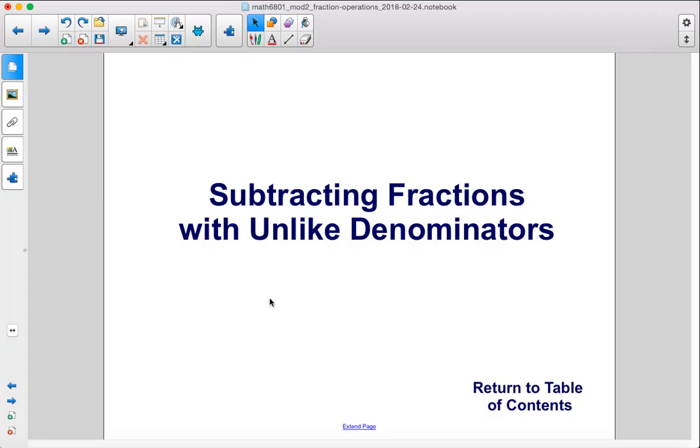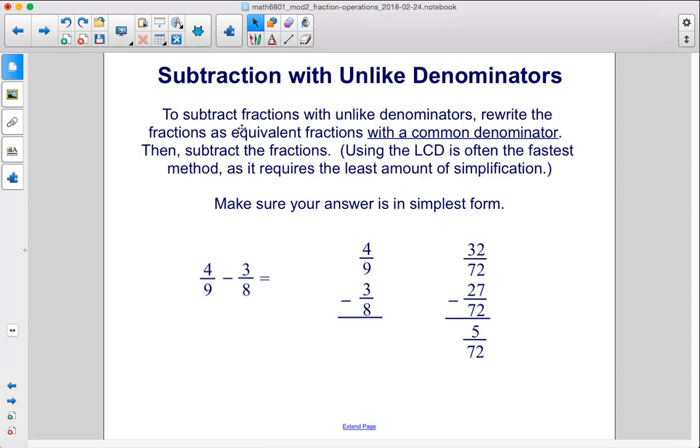Subtracting fractions with unlike denominators. To subtract fractions with unlike denominators, rewrite the fractions as equivalent fractions with a common denominator. Then, subtract the fractions. Using the lowest common denominator is often the fastest method, as it requires the least amount of simplification.